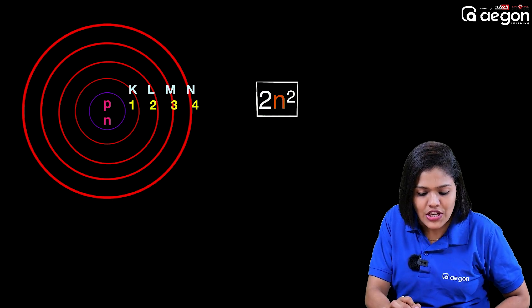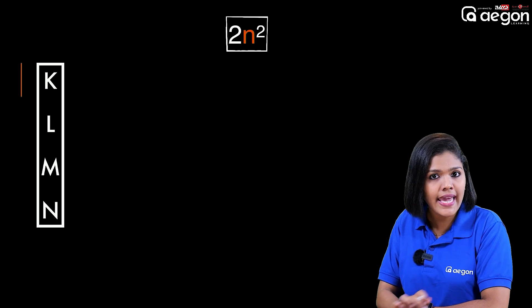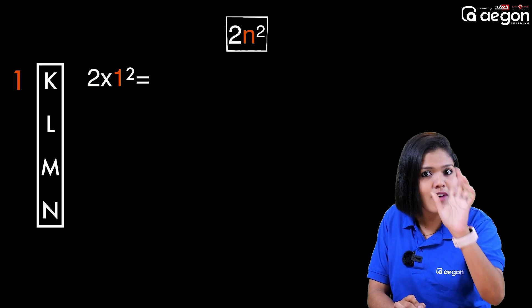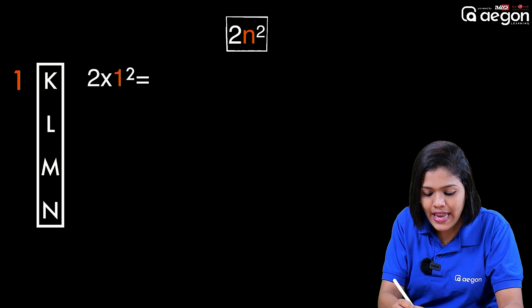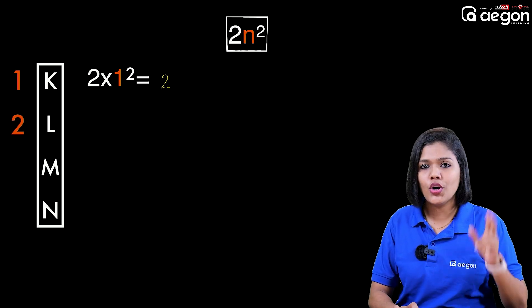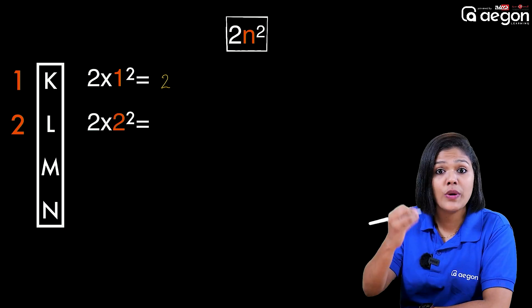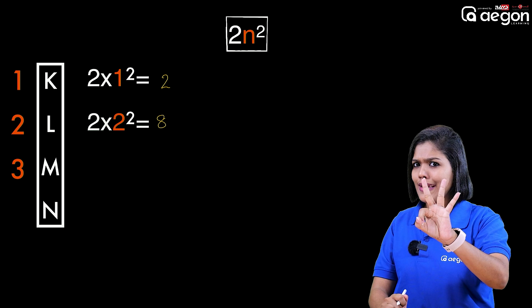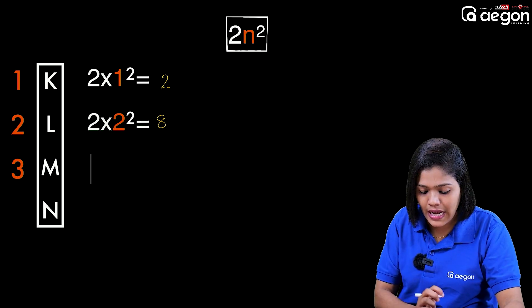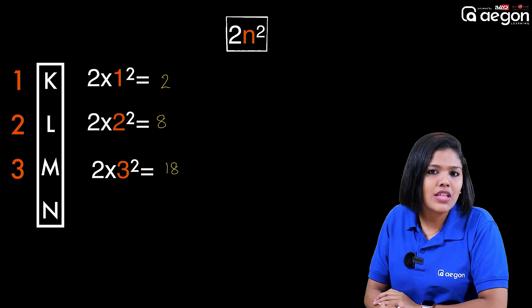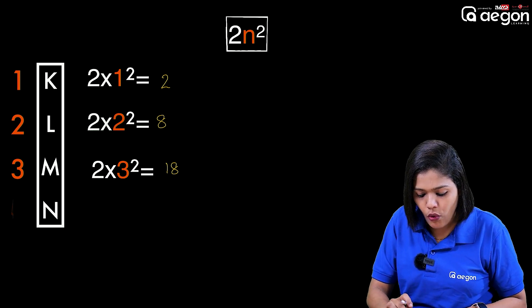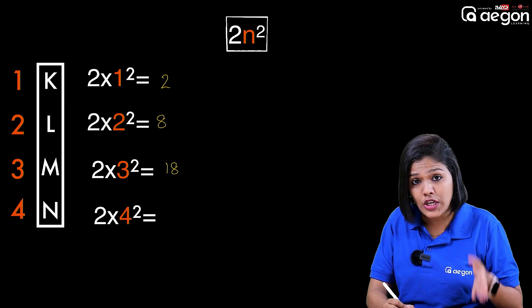What is N in these shells? For K shell, N equals 1: 2 into 1² = 2 electrons. For L shell, N equals 2: 2 into 2² = 2 into 4 = 8 electrons. For M shell, N equals 3: 2 into 3² = 2 into 9 = 18 electrons. For N shell, N equals 4: 2 into 4² = 2 into 16 = 32 electrons.